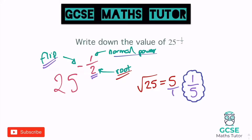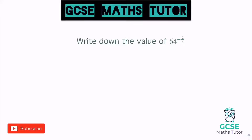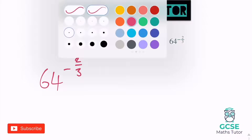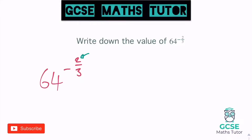Let's have a look at another one where the normal power on the top is something different to 1. Write down the value of 64 to the power of negative 2 thirds. We've got a 2 on the top, so as a normal power it's going to square whatever number we're looking at. The 3 on the bottom is going to do a cube root. And the negative symbol is going to flip this number over — do the reciprocal.